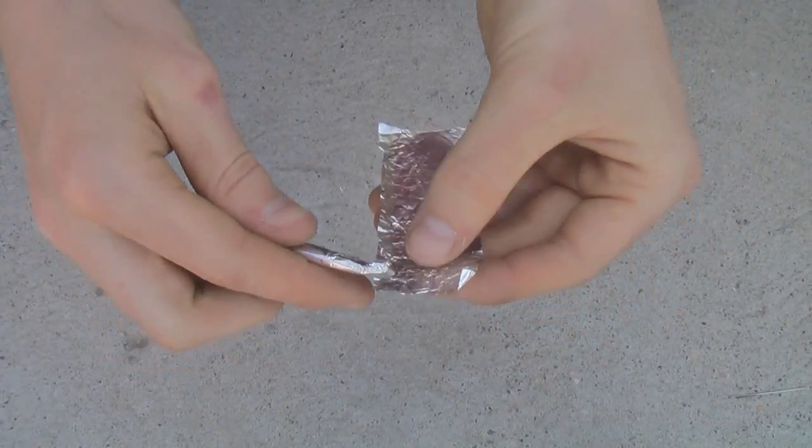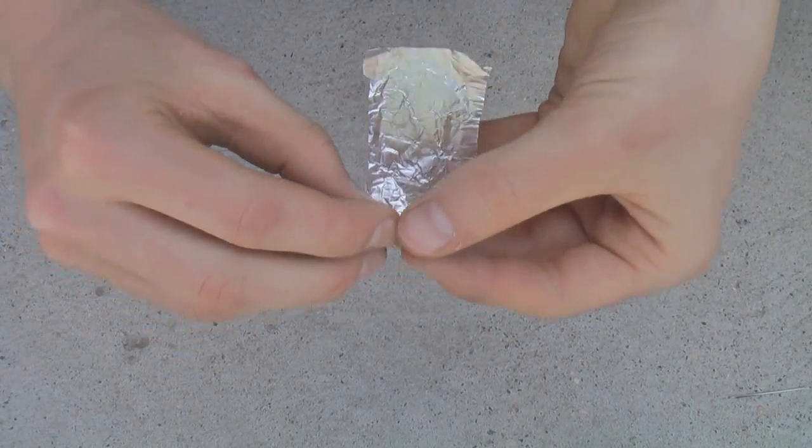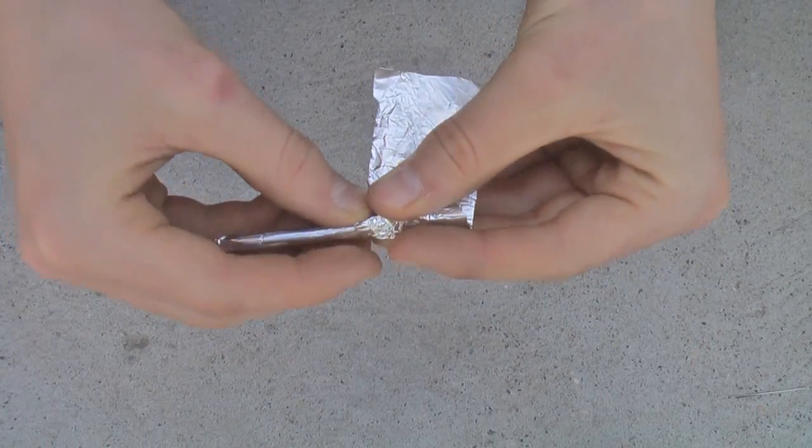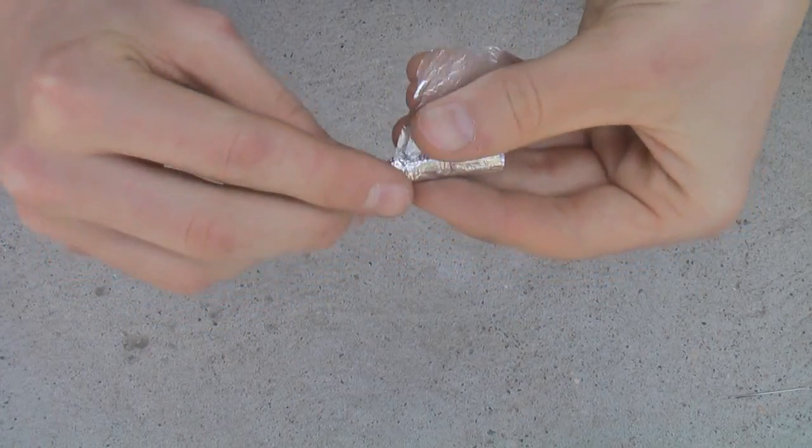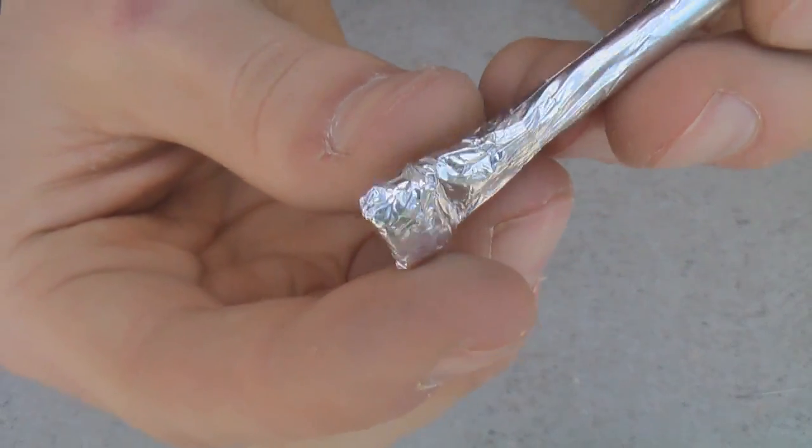The last thing you want to do is take a small piece of aluminum foil like this and wrap it up around the end of your match rocket. This will just keep the rolled up end from unraveling when you launch it. Your match rocket is now complete.